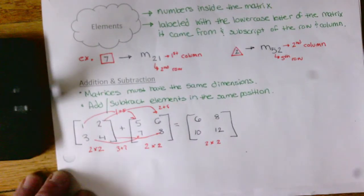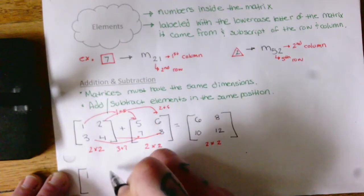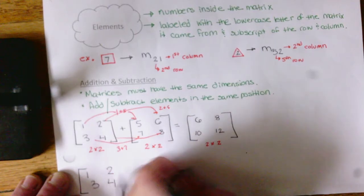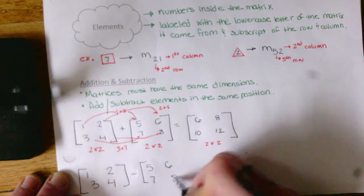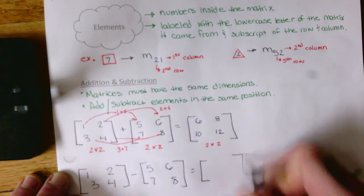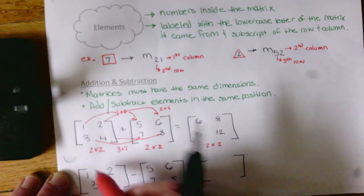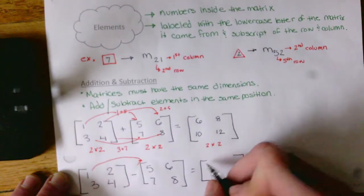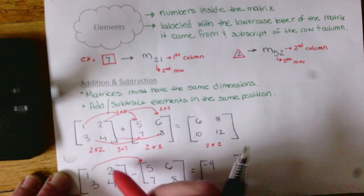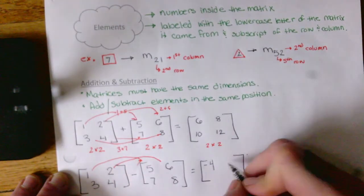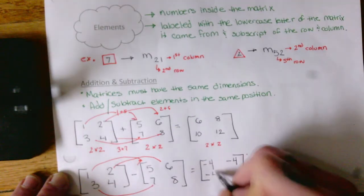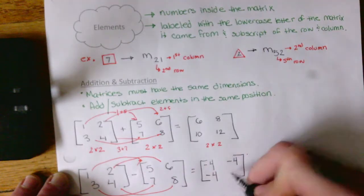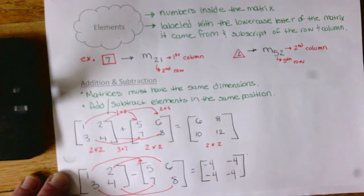Okay, similarly, if I were to subtract one matrix from another, so long as they are the same dimensions, I can subtract elements that are in place. One minus five, negative four. Two minus six, negative four. Three minus seven, negative four. Four minus eight, negative four.